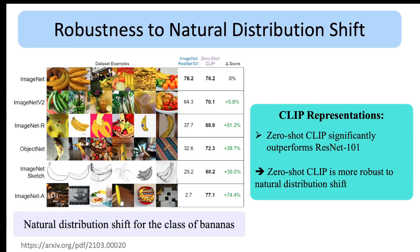The last experiment is on the robustness of CLIP features under natural distribution shift. This figure shows some example images from the class of bananas in ImageNet as well as five other datasets such as ImageNet V2, ObjectNet, and ImageNet Sketch.